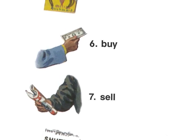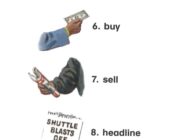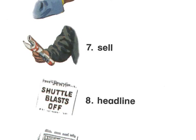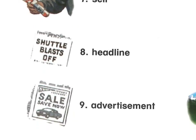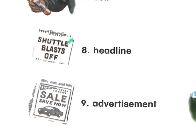Buying is when you pay money; selling is when you're trying to get money for something you have. On a newspaper we have the headline, which gives the main idea — for example, 'Shuttle Blast Off.' We also have advertisements in newspapers, and this is how newspapers and magazines make money — by selling advertisements. The car company gives the newspaper money to put an advertisement in it.